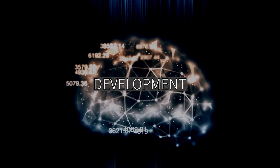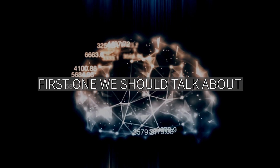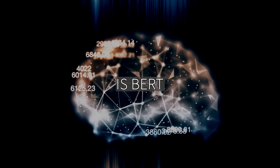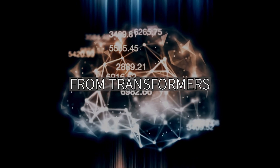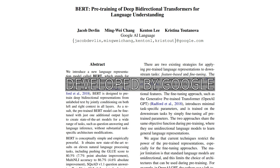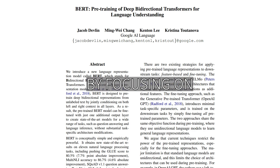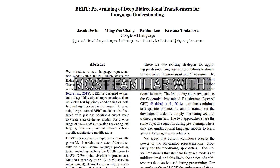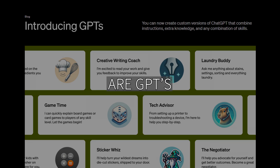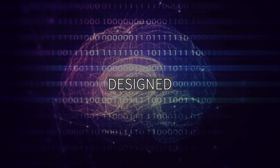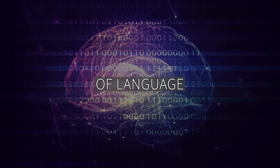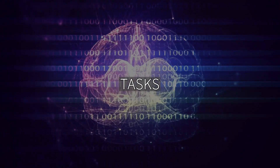Let's talk about the later developments of Transformers. The first one is BERT — Bidirectional Encoder Representations from Transformers — developed by Google. BERT advanced the field by focusing on bidirectional text. And then the ones we're most familiar with are GPTs — Generative Pre-Trained Transformers — a series of models created by OpenAI, designed for a variety of language understanding and generation tasks.